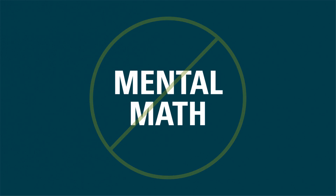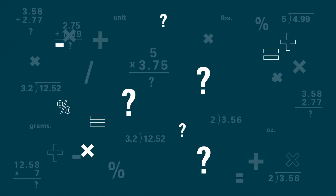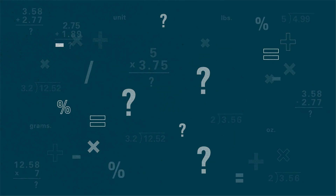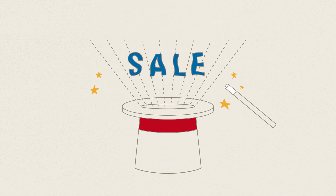See you later, mental math in the cereal aisle. By finding the cost per ounce, or whatever unit of measure, you get the best bang for your buck and you won't be tripped up by sales signs.